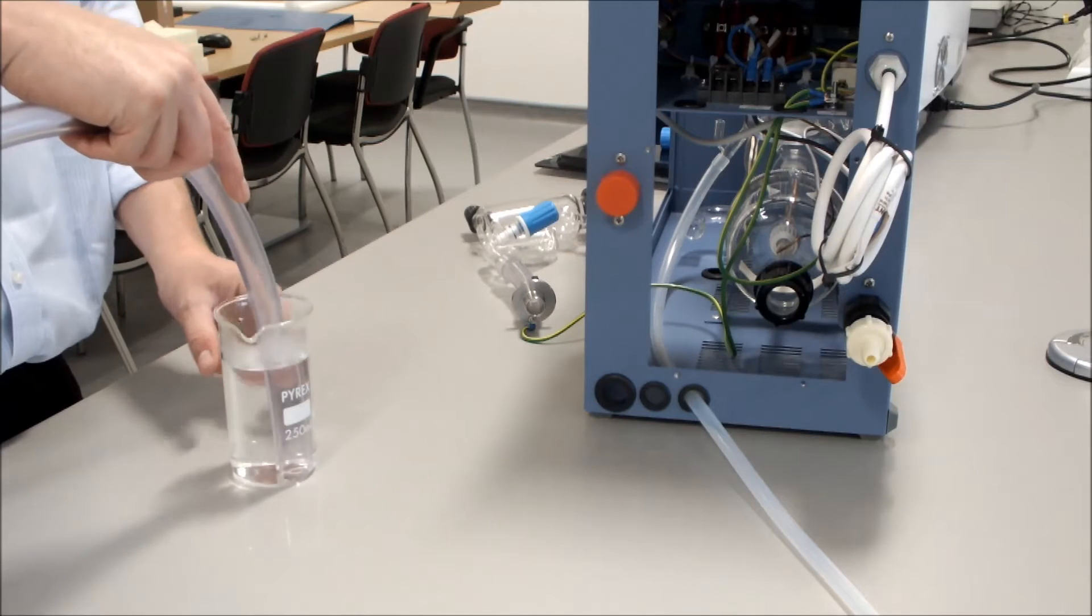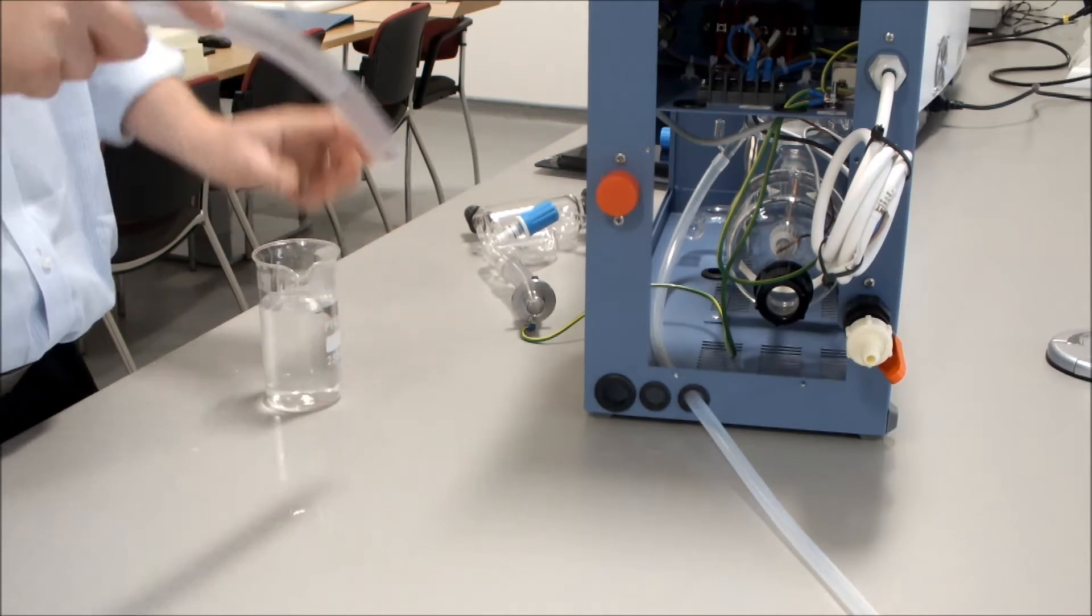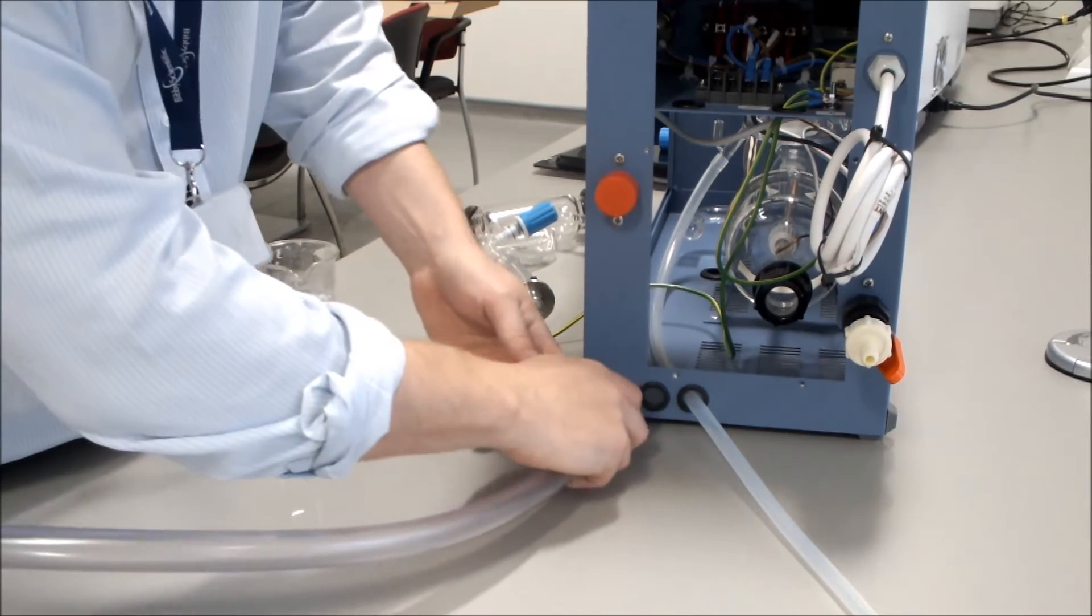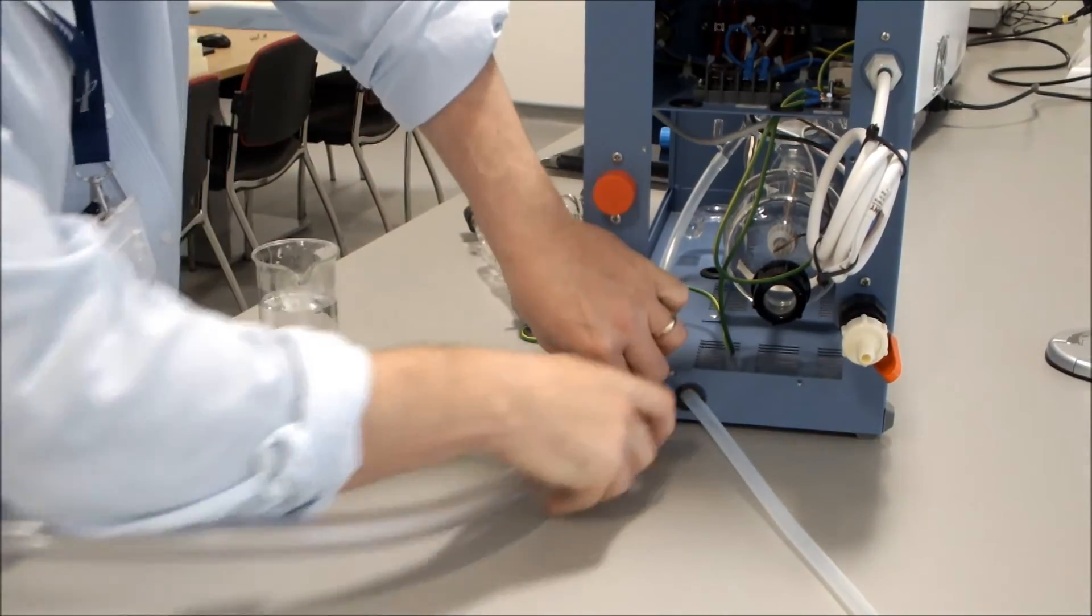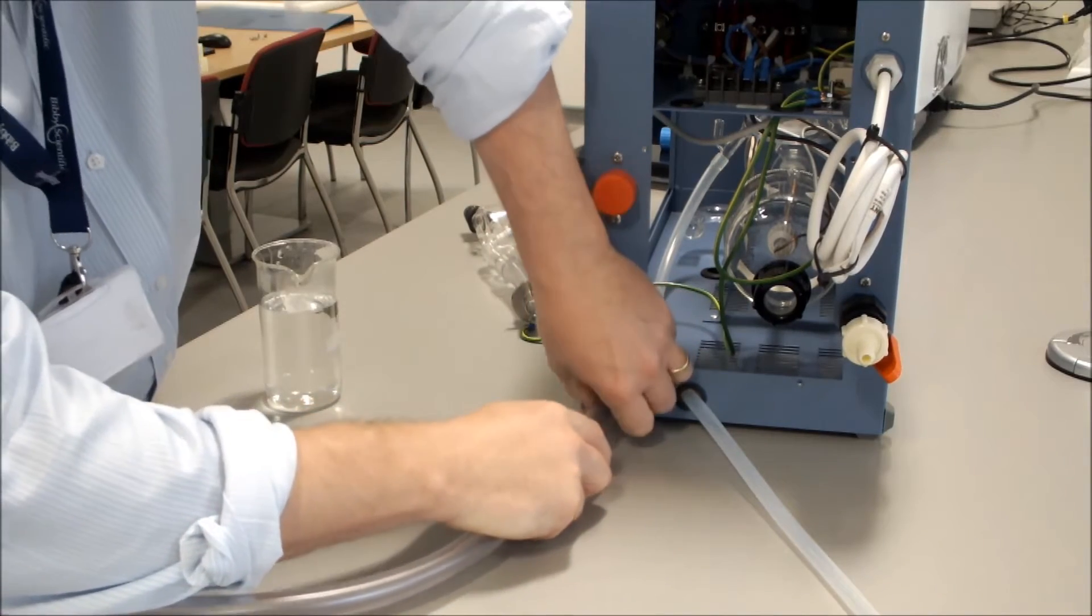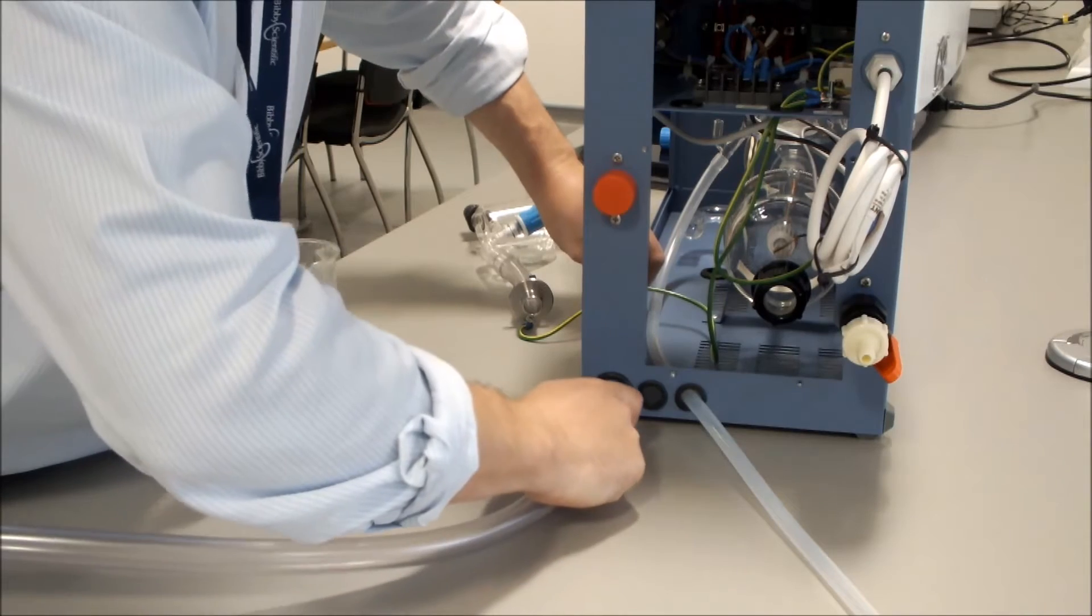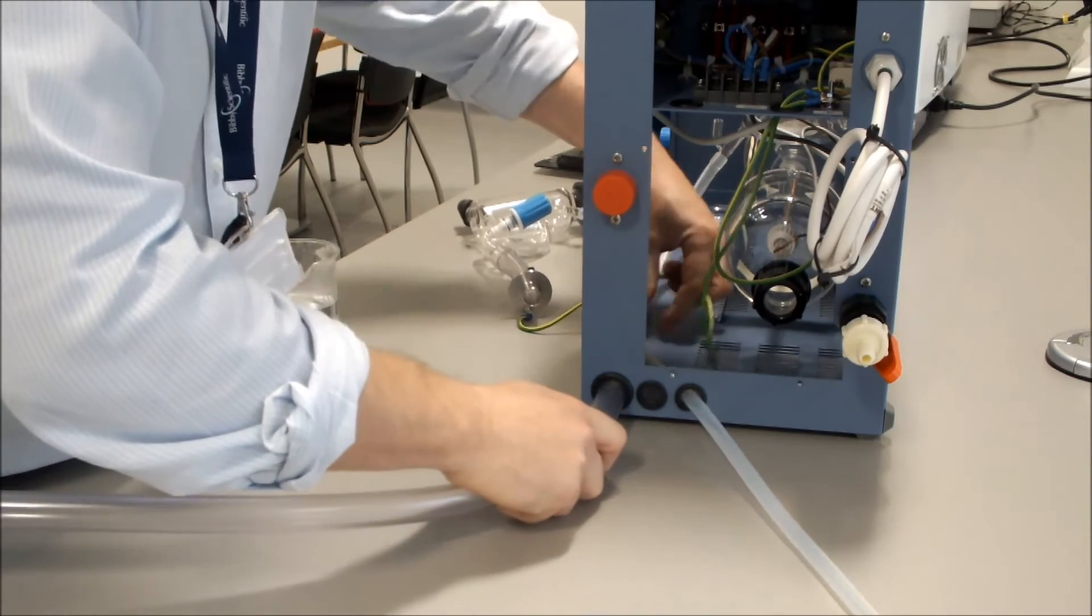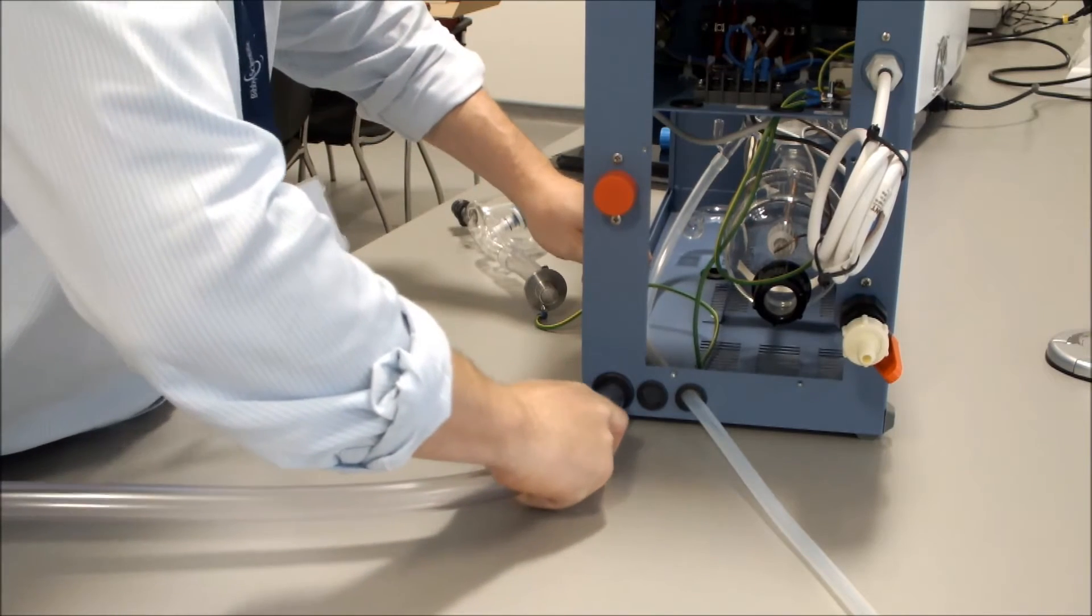Once the 16mm tubing has been in the water for approximately 20 seconds, it can be taken out and fed through the largest of the three holes inside of the unit. Once it's through, it needs to extend into the unit by approximately one foot.